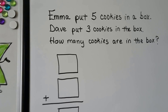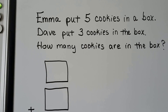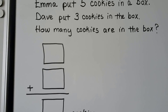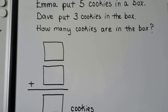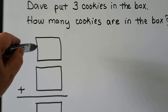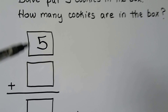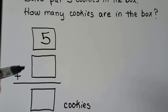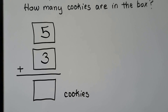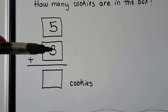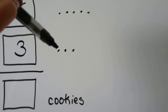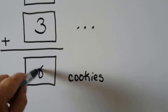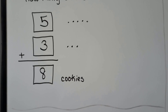Emma put five cookies in a box. Dave put three cookies in the box. How many cookies are in the box? Let's fill this in to match the word problem. Emma put five cookies in a box, so five is important — we're going to put that here. Dave put three cookies in the box — we're going to put a three here. Five plus three more — one, two, three, four, five, and three more — six, seven, eight. Five plus three is equal to eight. Eight cookies — that's how many cookies are in the box.